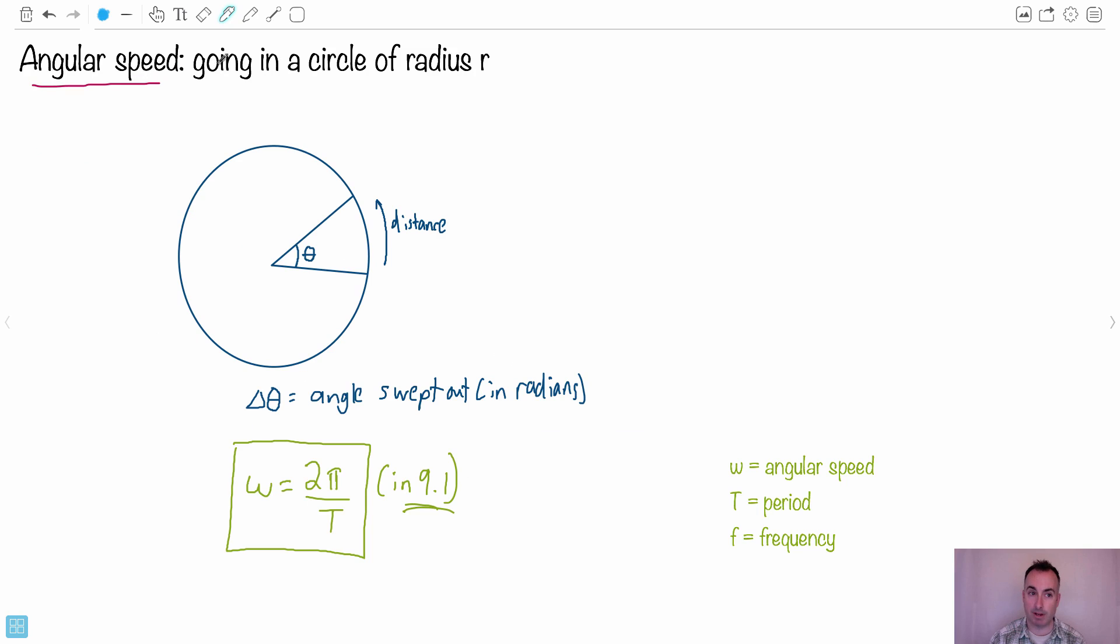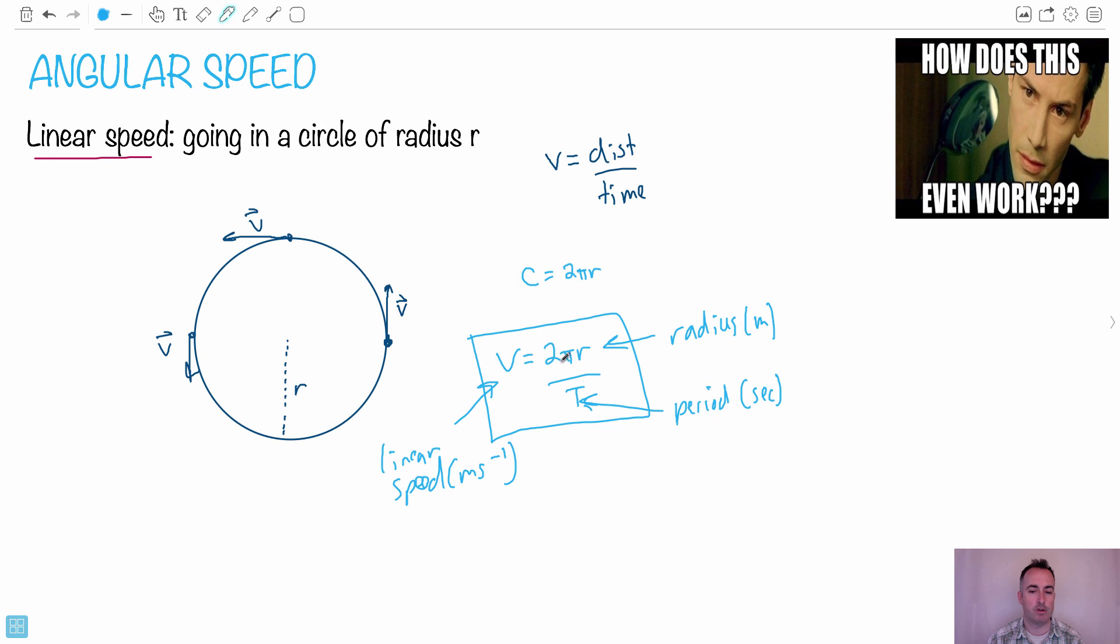Now in a similar way, let's do the angular speed. This time you're again going around in a circle of radius r. This time the angle is going to be the important thing. So this distance is going to kind of be like this. Usually with this we would make it a circle of radius r equals one.